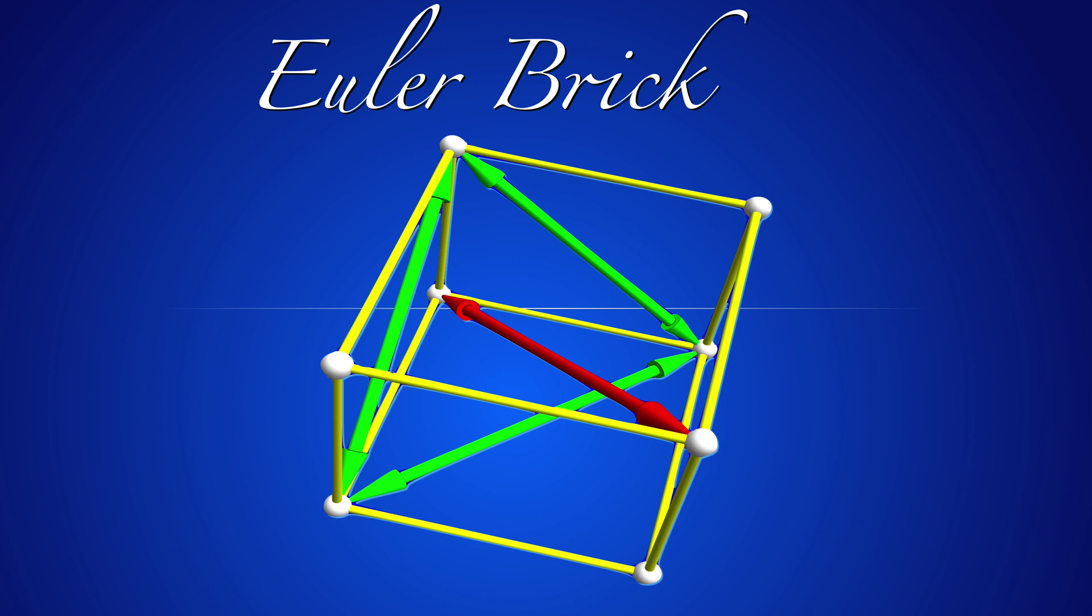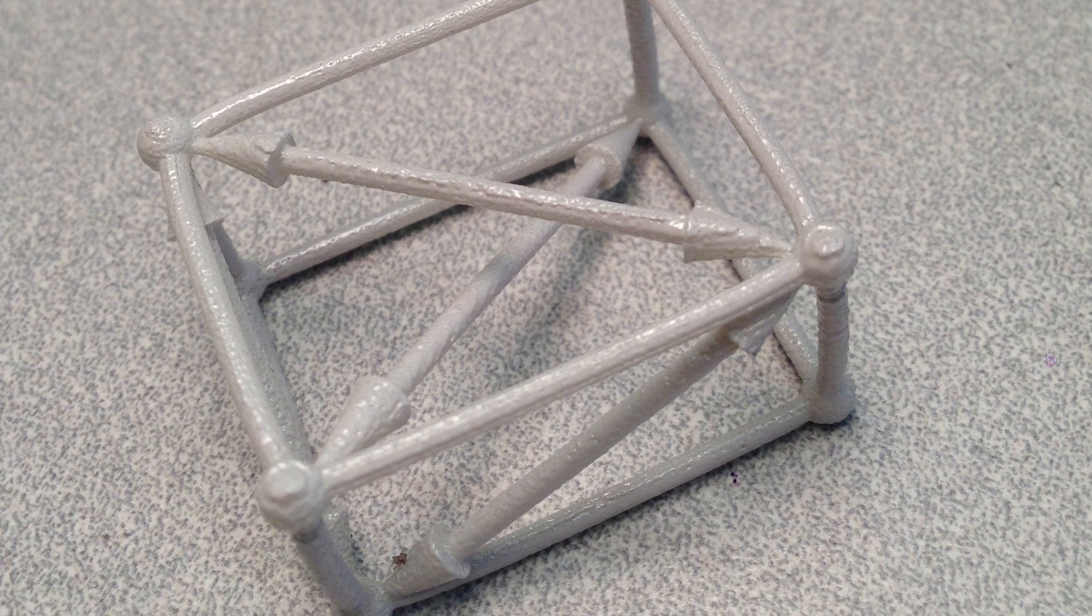I'd also been obsessed with the Euler brick. It's unknown whether there's a cuboid with integer side lengths for which all face and space diagonals are integers. So here's a printout, very small, smaller than a matchbox. By the way, if you have a few matches, you could even assemble this with a bit of glue without 3D printing.